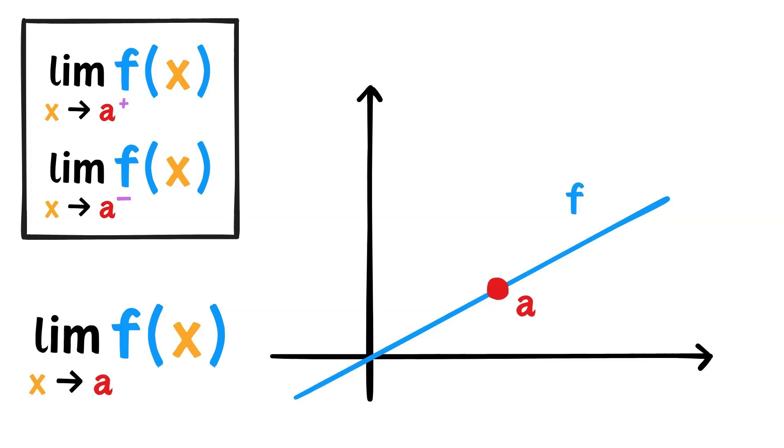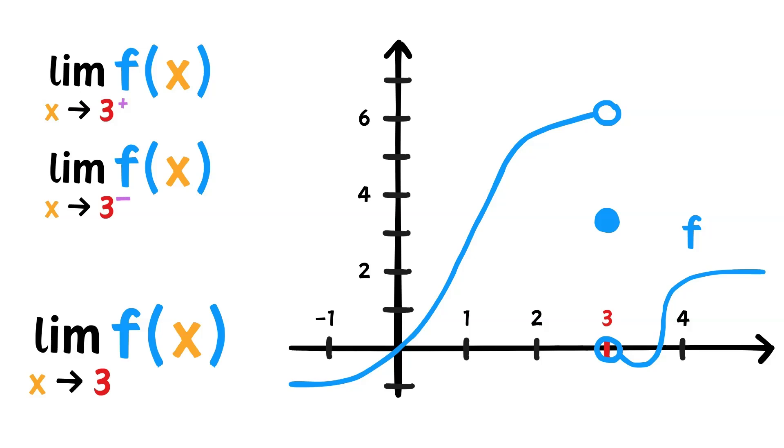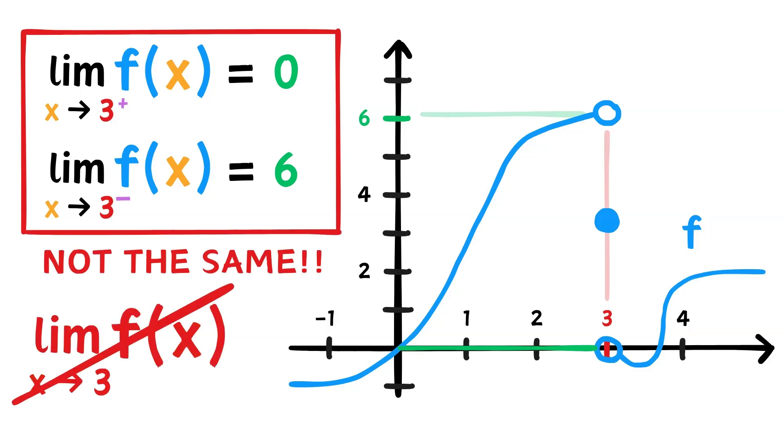For a limit to exist, the one-sided limits must exist and be equal. Let's see what this means. In this example, does the limit of f of x as x approaches 3 exist? Well, let's first take the limit from the left. As x approaches 3 from the left, the function seems to approach 6. So that's the one-sided limit from the left. On the other hand, taking the limit from the right, the function seems to approach 0. So both one-sided limits exist but are not the same. Therefore, the overall limit of f of x as x approaches 3 cannot exist.